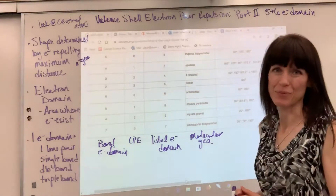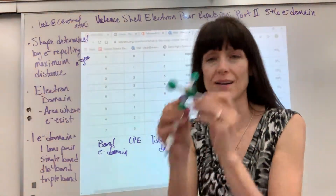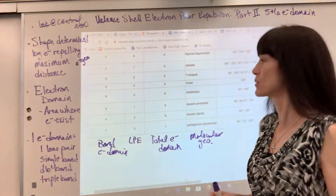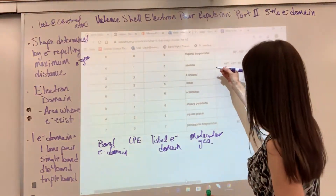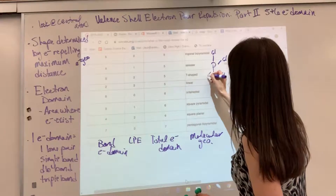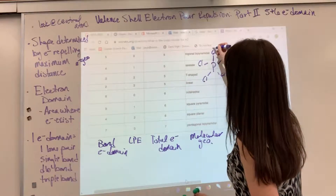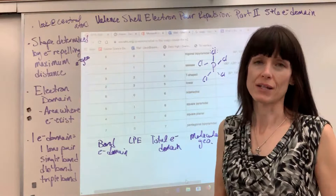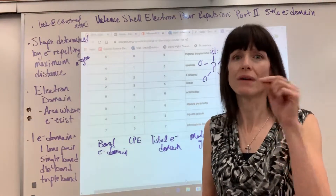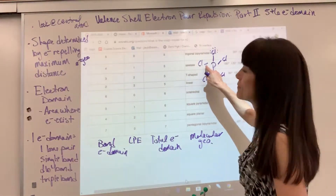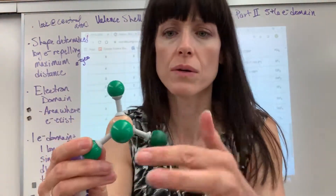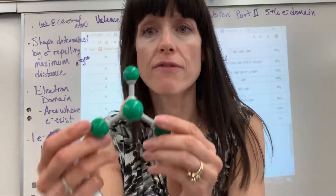We also have the bond angle and an example for each. Let's begin with five electron domains. The example is phosphorus pentachloride, PCl₅. We have phosphorus in the center with five chlorine atoms around it. Counting the electron domains around the central phosphorus atom: one, two, three, four, five electron domains.